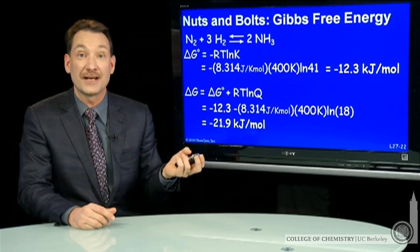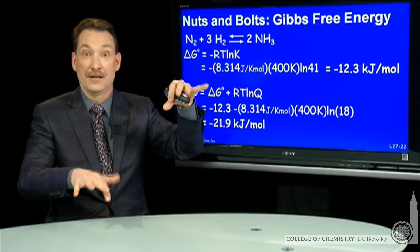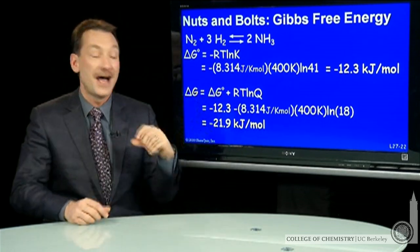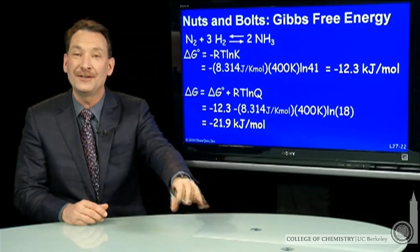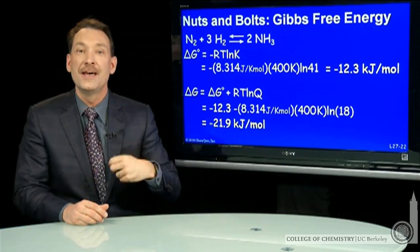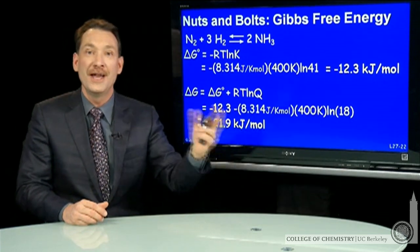Just as we expected, the reactants at a higher free energy than the products, so when I subtract products minus reactants, I get a negative number, implying that I'm going to go downhill towards the products, the exact same prediction I got when I compared Q and K.